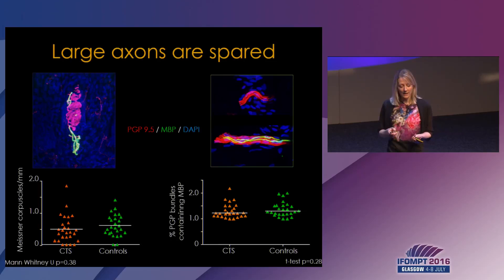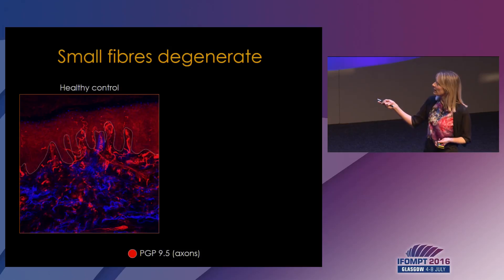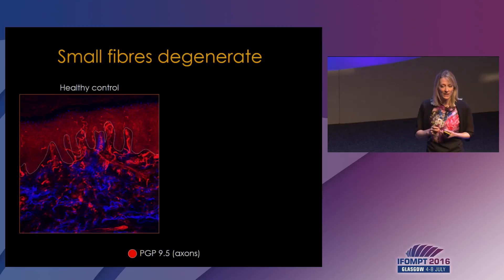However, when we looked at the small fibers, it was a very different story. This is a skin biopsy with the dermal layer at the bottom and the epidermal layer on top. The fibers in red that penetrate into the epidermal layer are exclusively small fibers, as large fibers never penetrate into the epidermal layer. By counting how many nerve fibers a patient has in the epidermal layer, we get an indication of potential small fiber degeneration.